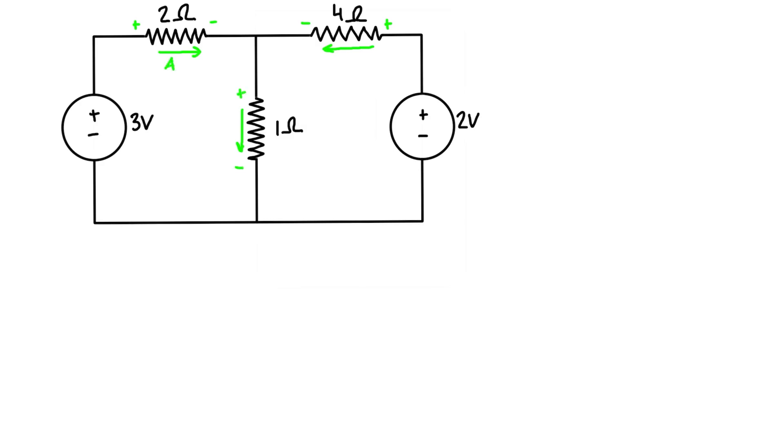You can even label them like A, B, and C just to give them some names, but I find this reduces a lot of the confusion in the method. Now the actual method starts when you basically label on your mesh currents. So we label on a mesh current in each loop, we're going to have i1 and let's call this i2.